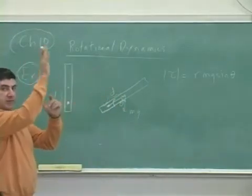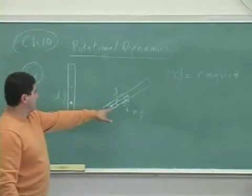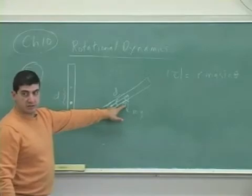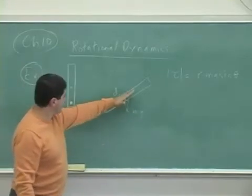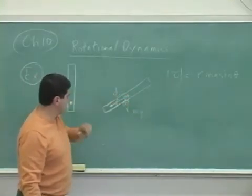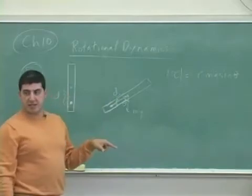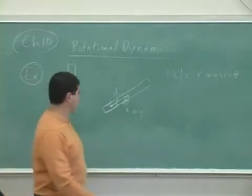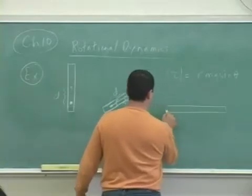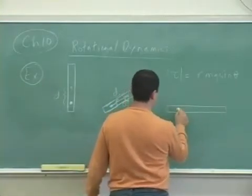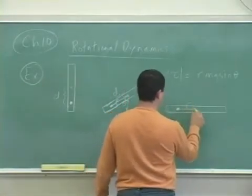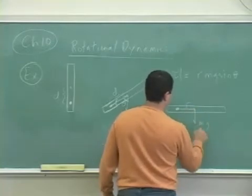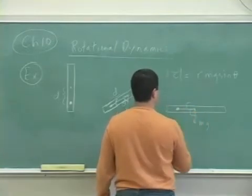So as the thing is falling, what's going to happen is theta is going to increase, right? The angle between the R and the mg is increasing. The maximum that theta can be is 90. When the meter stick is like this, that's 90.